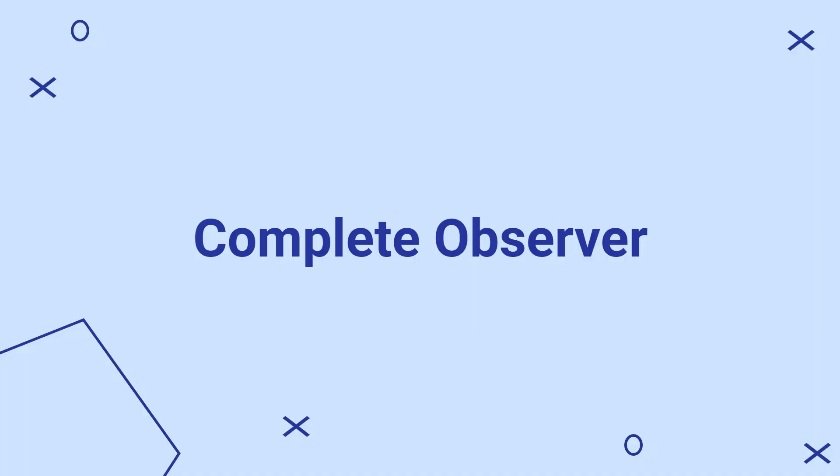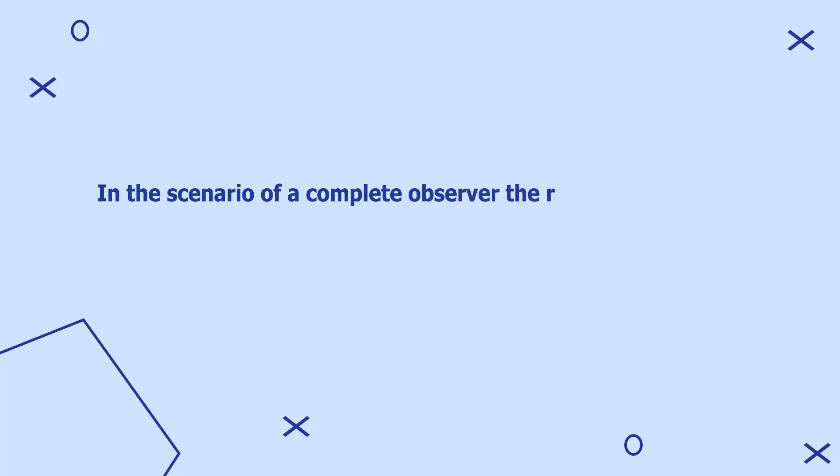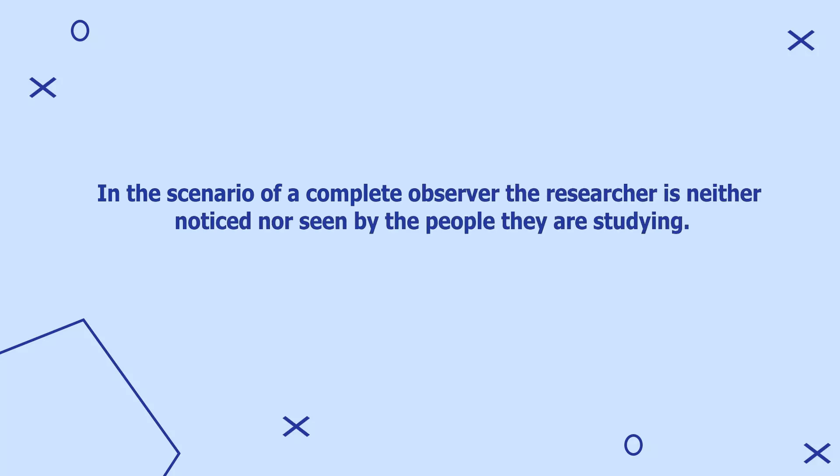In the scenario of a complete observer, the researcher is neither noticed nor seen by the people they are studying. However, in most cases, the role of the researcher may change during an observation. For example, a researcher can begin as a non-participant observer and then move into a participating role and vice versa. The role of the researcher may exist in a continuum during the research process, allowing researchers to move from being complete outsiders to being complete insiders.